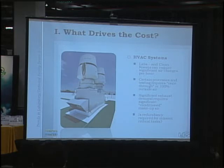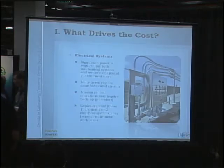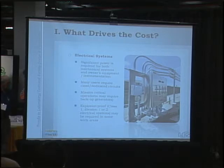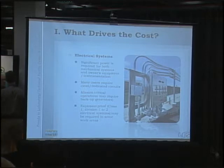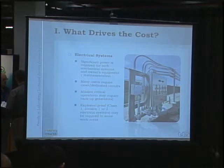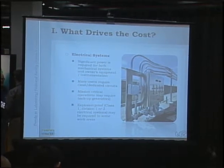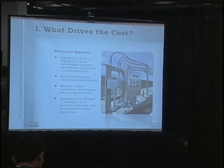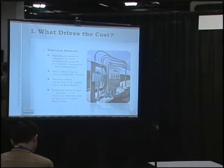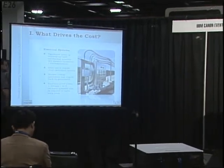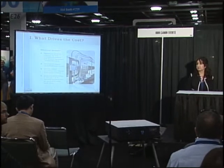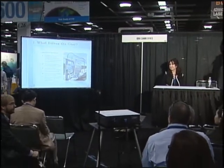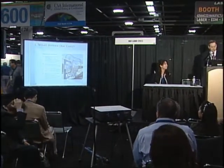The HVAC systems and the volume of air pushed through labs is extremely high. For electrical systems, we have to have power to run the mechanical systems, which are quite significant. We also have a lot of clean, dedicated circuits, backup generators for mission-critical tasks, and in cases where we're dealing with solvents, corrosives, or chemicals with flammability issues, you'll be dealing with explosion-proof switches and devices throughout the lab.